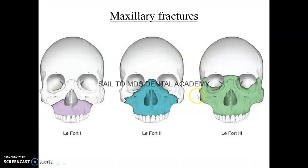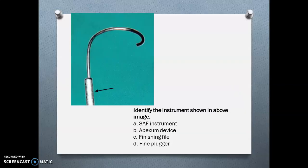You can see in the diagram the different types of maxillary fractures: Le Fort 1, Le Fort 2, and Le Fort 3. This helps clear the confusion in your mind regarding the different options. The next image — identify the instrument shown: it is your Apexum device.